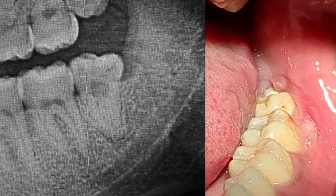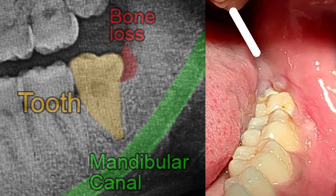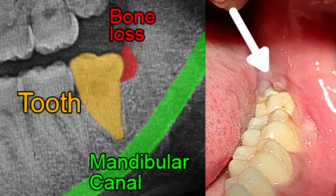Today I am going to demonstrate non-surgical removal of a partially impacted left mandibular third molar. Clinically, the distal cusp of the tooth is covered by a pericoronal flap. On the radiograph, we can see that there is bone loss distal to the third molar due to the presence of the dental follicle.